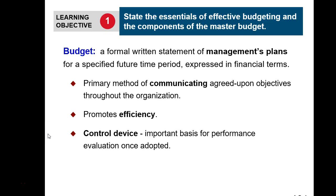In chapter 23, we are focused on how to prepare what is known as a master budget. But first, let's define what a budget is. A budget is a formal written statement of management plans for a specified future time period expressed in financial terms. In other words, this budget indicates what management expects to take place from a financial standpoint over a specified time period.